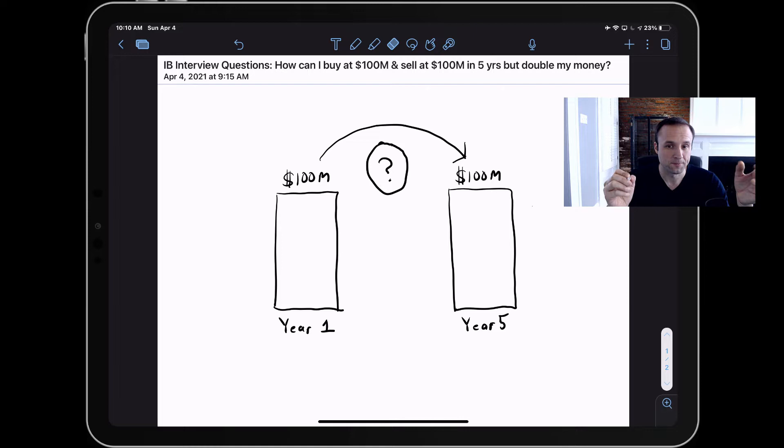We're buying a company, selling it at the exact same price in five years, but somehow doubling our money. In fact, if we purchased this company with a hundred million dollars in cash and sold it for a hundred million dollars in cash, we wouldn't generate a return and we certainly wouldn't double our money. The trick here is in how the purchase is financed at the outset.